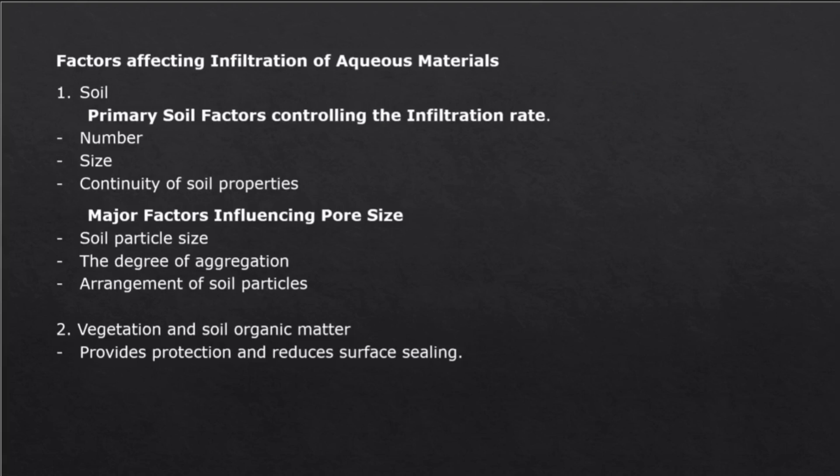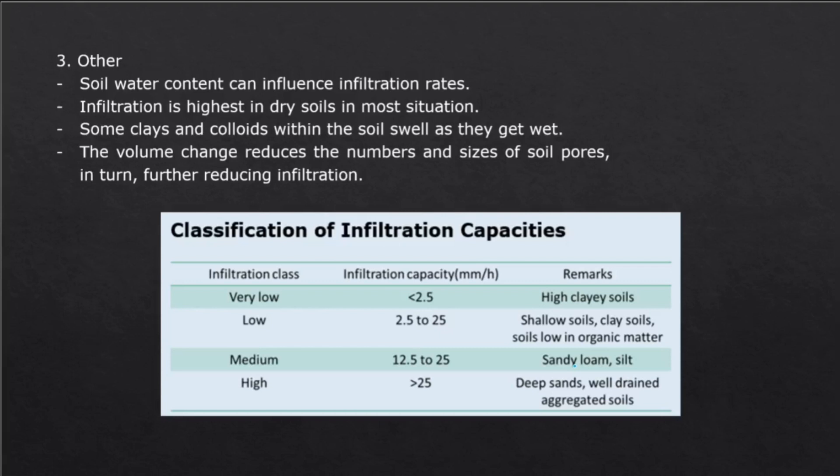Now we have the factors affecting infiltration of aqueous materials. First, we have the soil, in which the infiltration rate is influenced by the number, size, and continuity of soil properties. For pore size, it's affected by the soil particle size, the degree of aggregation, and the arrangement of soil particles. Then we have vegetation and soil organic matter, which provides protection and reduces surface sealing. This also affects infiltration rates. And then we also have soil water content. Essentially, for dry soils, infiltration is the highest. Some clays within the soil will tend to get bigger as they get wet, and then these volume changes will reduce the numbers and sizes of soil pores, which in turn will reduce infiltration.